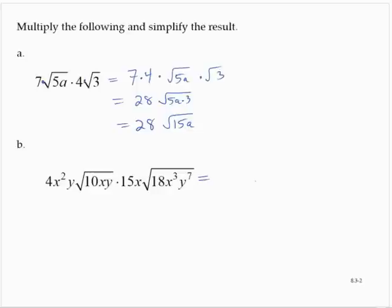Using a similar idea here, since we have 4x squared y times the square root of 10xy by 15x times the square root of 18x cubed y to the seventh, I can rewrite this as 4x squared y times 15x times the square root of, go ahead and multiply those, 10xy times 18x cubed y to the 7.